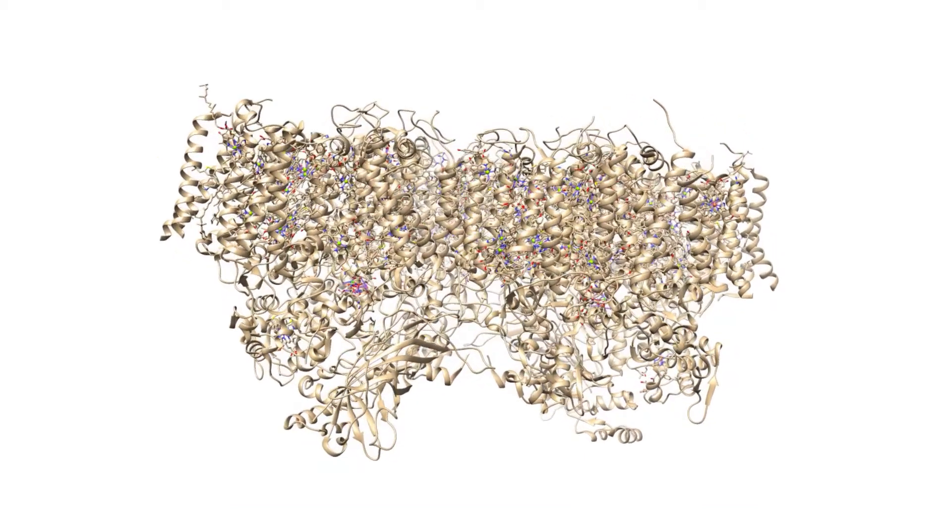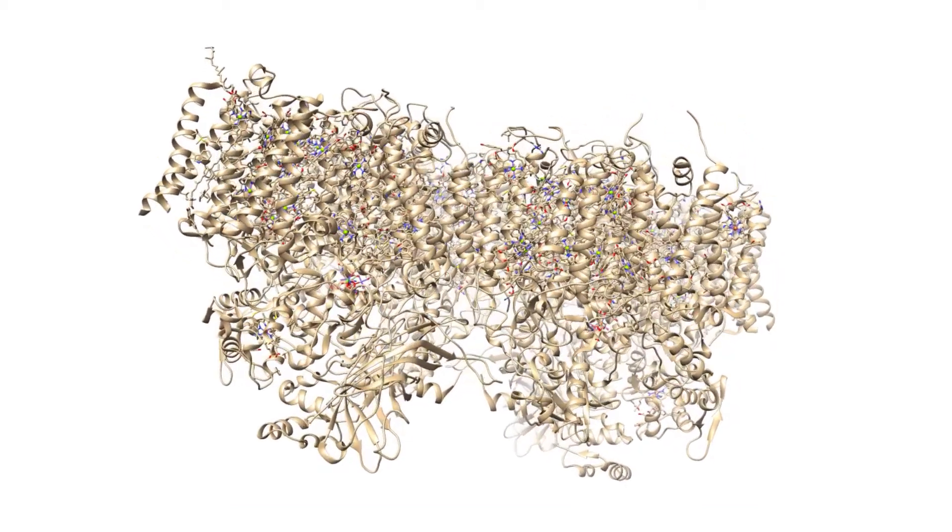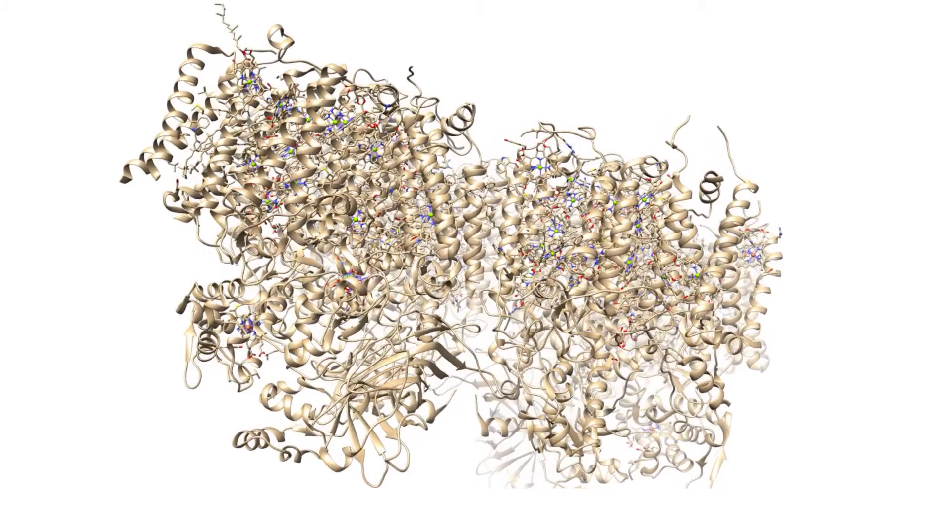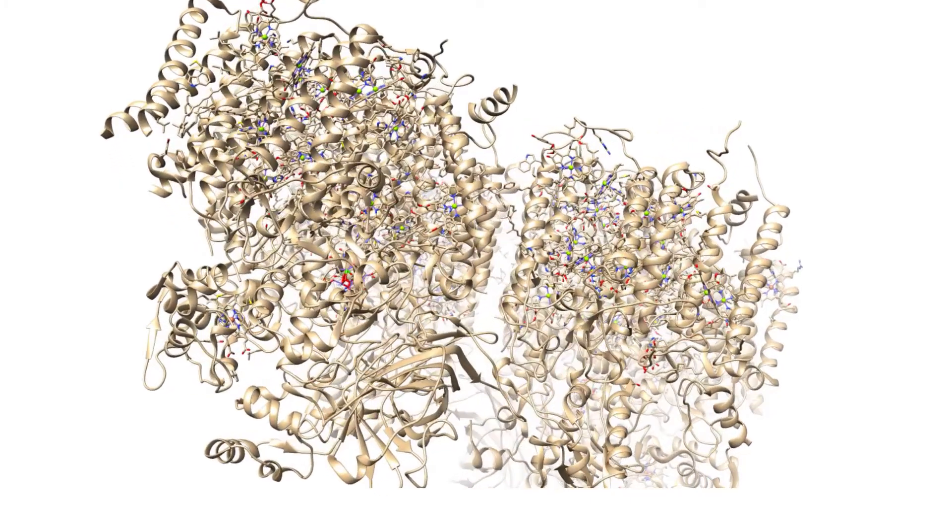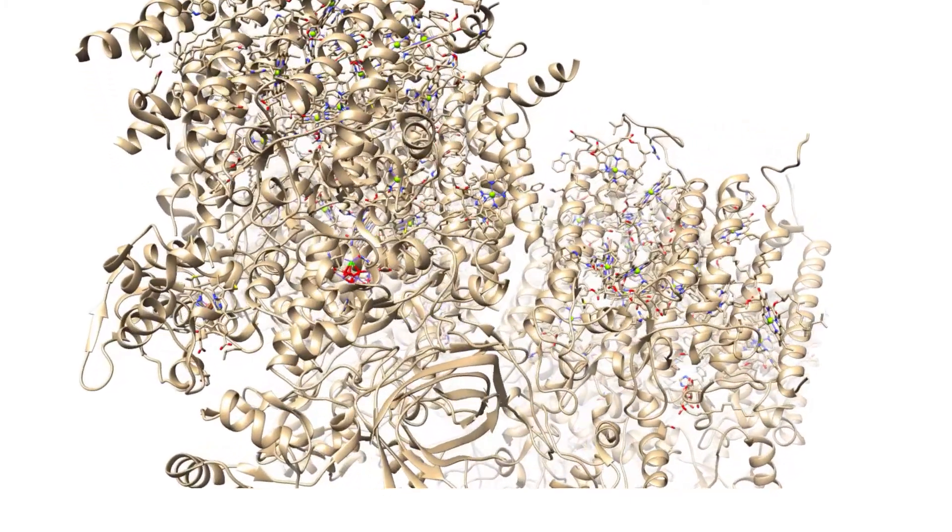This is the structure of photosystem 2. As you can tell, it is a very complex molecule with many parts. I will focus directly on the oxygen evolving center of photosystem 2. This is where water is oxidized to oxygen by the oxidative power of manganese.